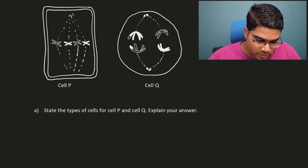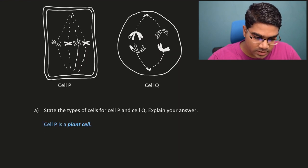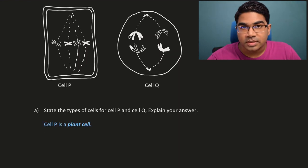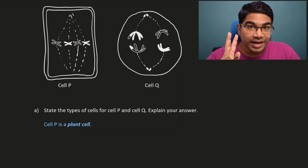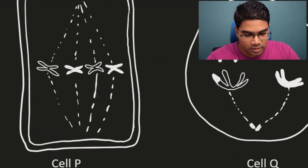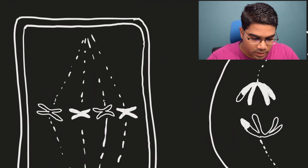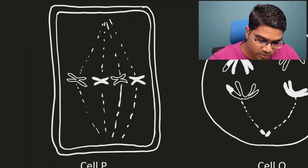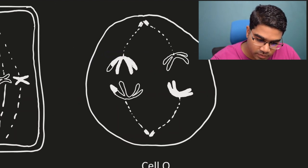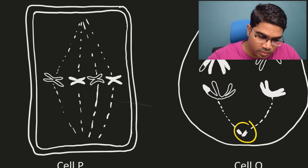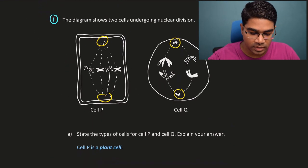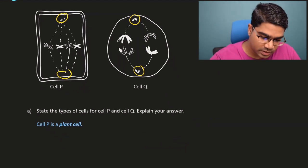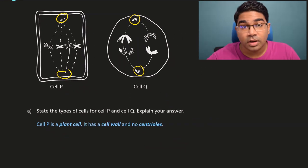Cell P is actually a plant cell. How do we know it's a plant cell? First of all, you can very clearly see that there is a cell wall. And the second thing is, you see here that there are no centrioles. Plant cells do not have centrioles. So cell P is a plant cell and the reason is it has a cell wall and no centrioles.